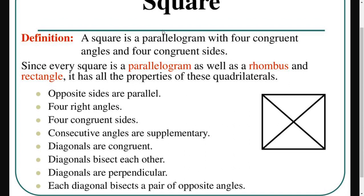Diagonals bisect each other. They are perpendicular because they bisect each other at right angles, and each diagonal bisects a pair of opposite angles.